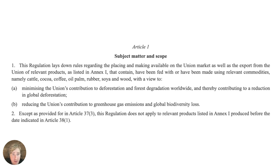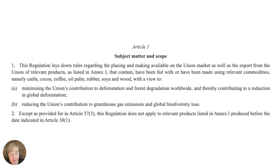Let's begin with the scope. What this regulation does is aim to minimize the EU's contribution to deforestation and forest degradation worldwide. This means you need information about the source. Here is a summary of the different commodities or products derived from them: cattle, coffee, oil palm, rubber, soy, and wood.